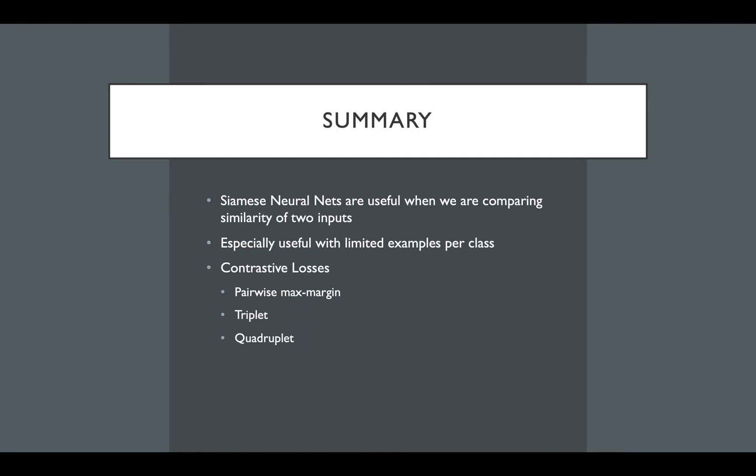So that was a primer on Siamese neural nets and their loss functions. The high level point to remember is that Siamese neural networks are useful when comparing if two inputs are similar or from the same category. And they're especially useful if we have lots of label data with very few examples per category. And this situation of learning a distance metric using labeled data is a distinct training setup where we use contrastive loss functions like the max margin pairwise contrastive loss, the triplet loss, and quadruplet loss.